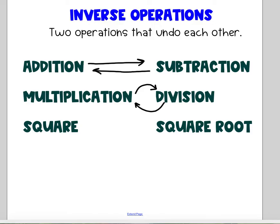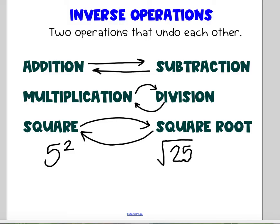Another inverse operation set that we are going to work with this year is the inverse of squaring a number, like 5 squared which is 25. How do I undo a square? I take the square root. The inverse of square root is squaring because the square root of 25 will bring you back to that 5.